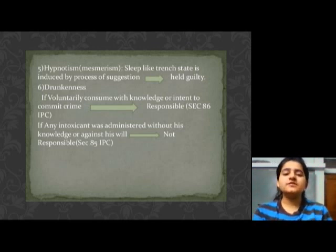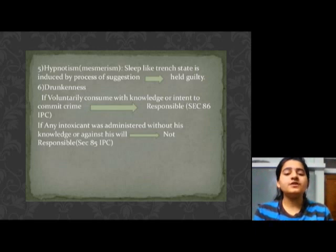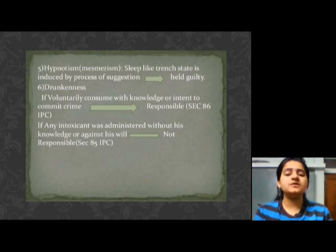Sixth is a drunken state. Under Section 86 IPC, a drunk person is held responsible for committing any type of crime. However, if any type of intoxicant was administered without his knowledge or against his will, then the person will not be responsible for his act under Section 85 IPC.